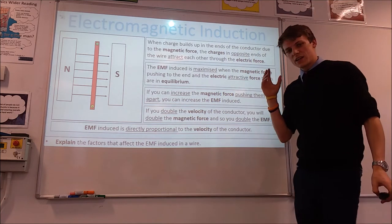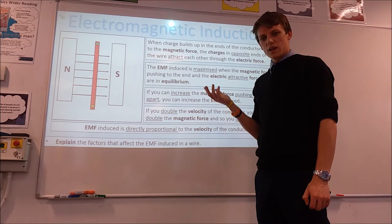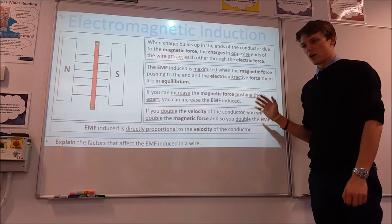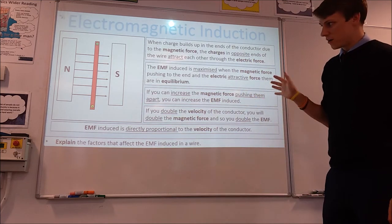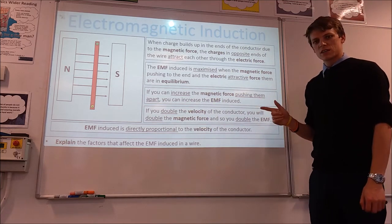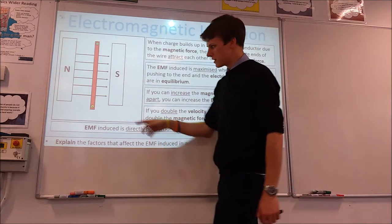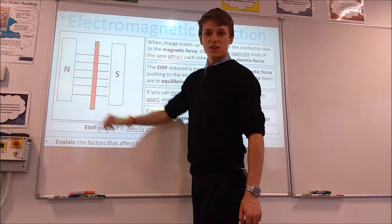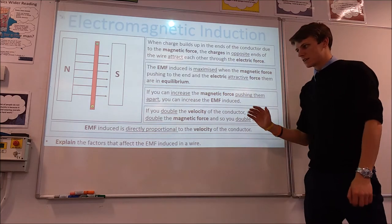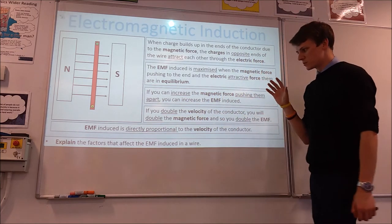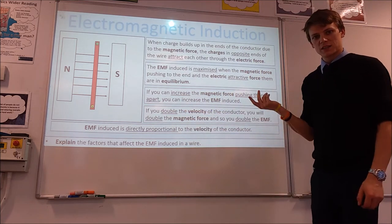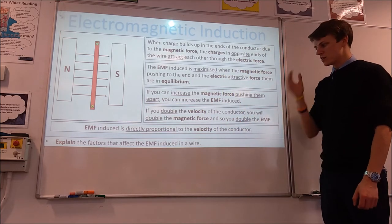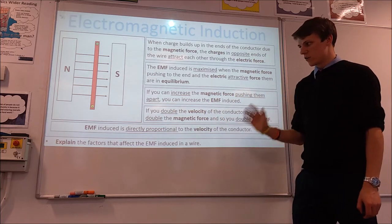To increase the EMF we need to increase the magnetic force, which allows us to build up more charges. If we increase the velocity of our conductor moving through the field, that increases the magnetic force. More specifically, if we double the velocity, we get double the magnetic force, so we can build up double the charge at the end, which results in double the EMF. So the EMF is directly proportional to the velocity of the conductor, provided the velocity is perpendicular to the magnetic field.